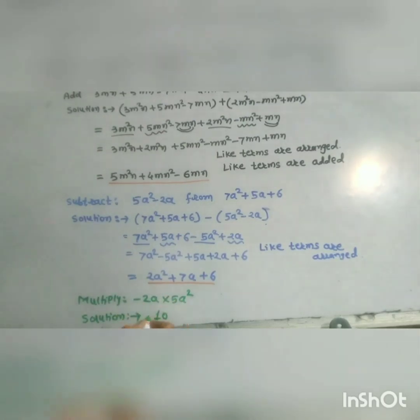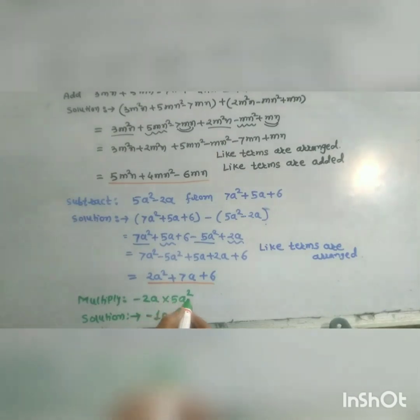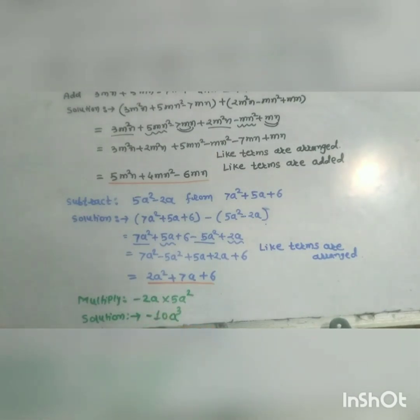Multiply negative 2a into 5a squared: 2 into 5 equals 10, put the negative sign; a into a squared equals a cubed. Therefore the answer is negative 10a cubed.